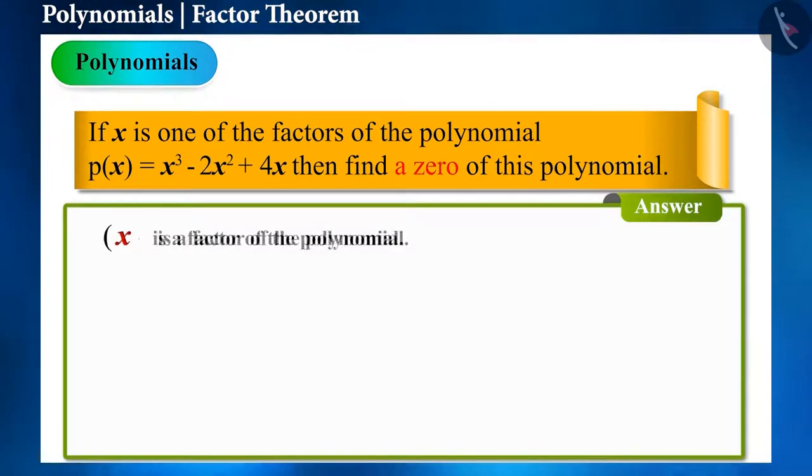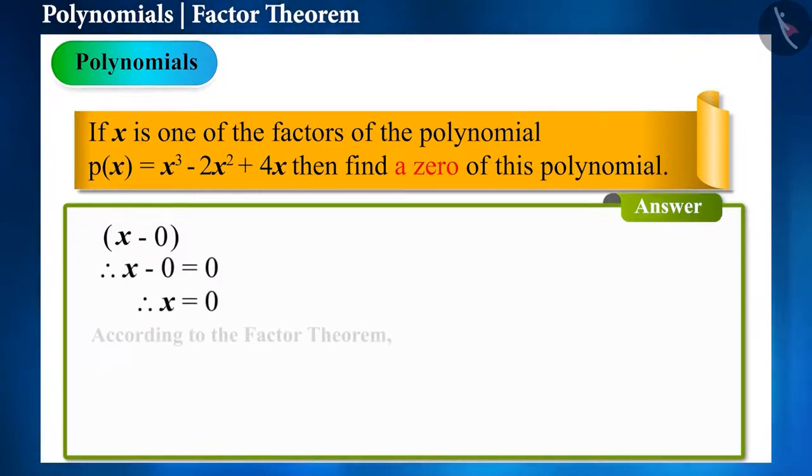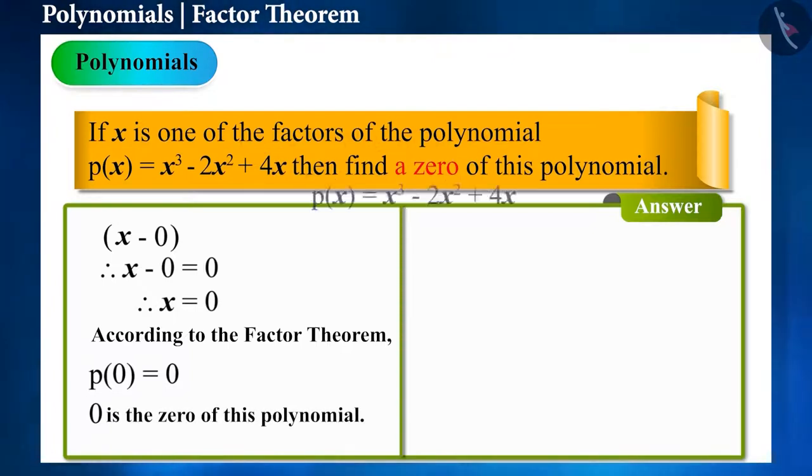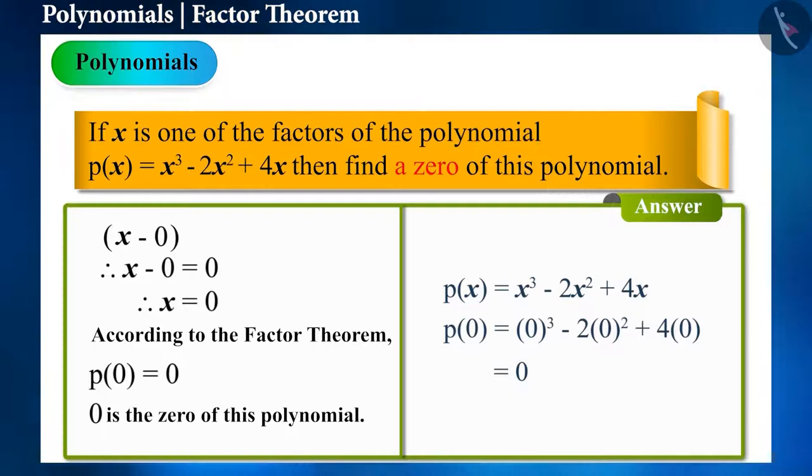So according to the factor theorem, 0 will be one of its zeros. You can also check the value of p(0) whether it is 0 or not. Now let's take the next question.